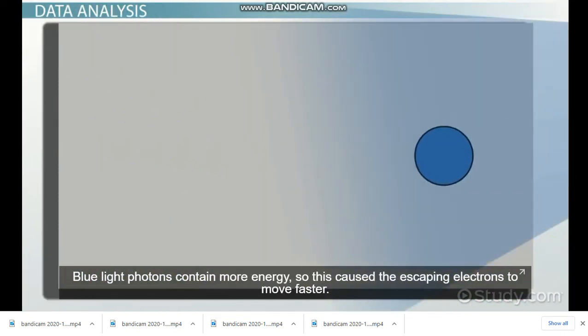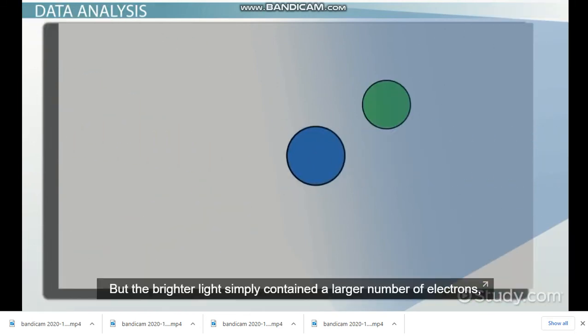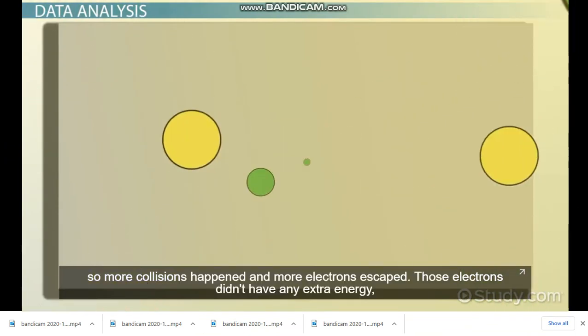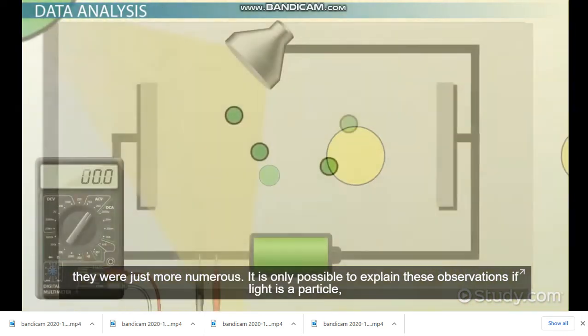Blue light photons contained more energy, so this caused the escaping electrons to move faster. But the bright light simply contained a larger number of photons, so more collisions happened and more electrons escaped. Those electrons didn't have any extra energy, they were just more numerous.